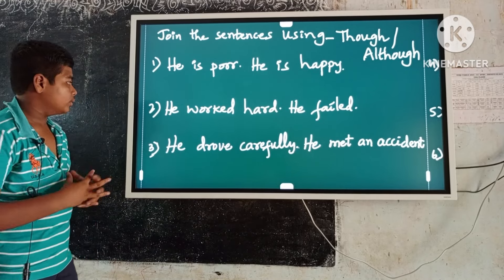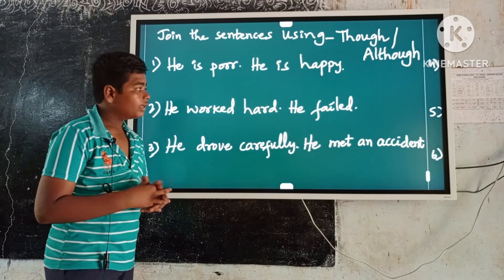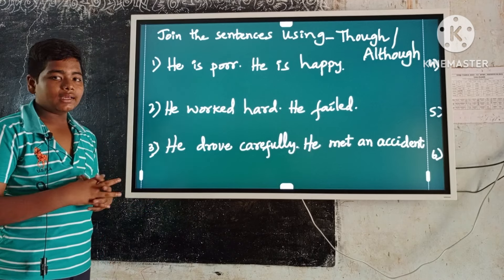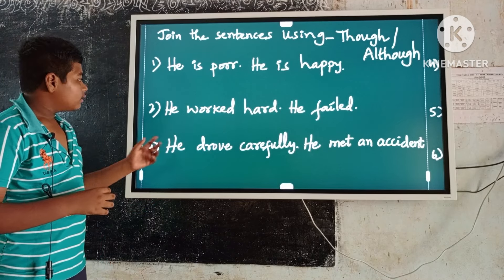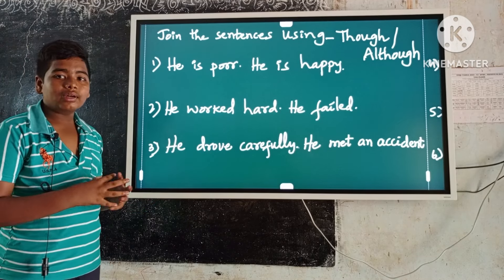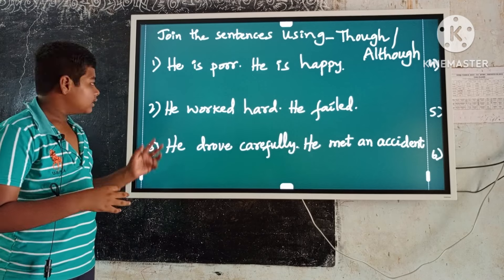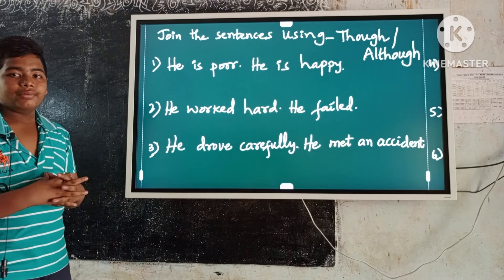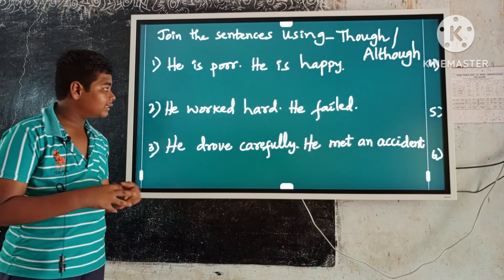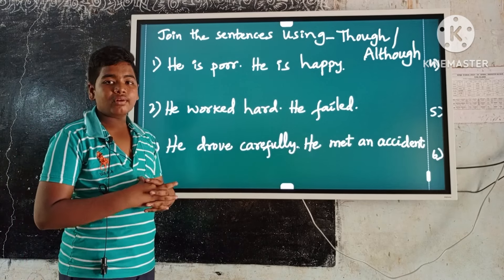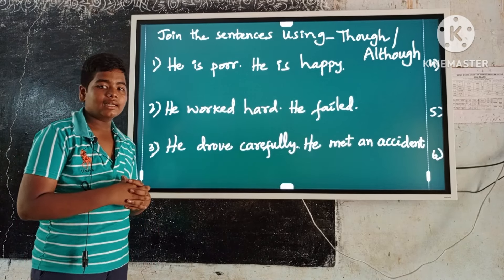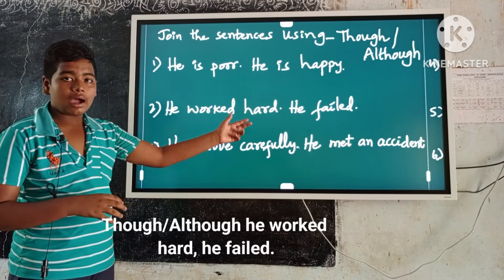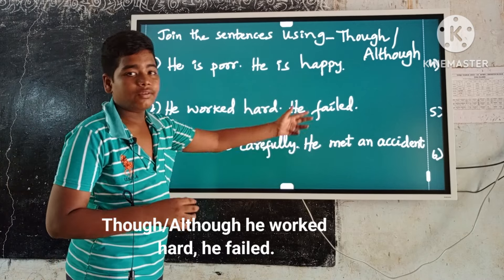Example number two: He worked hard. He failed. These are contrast ideas. Here the first occurring sentence is 'he worked hard.' Keep though or although before the first occurring sentence, and a comma before the second sentence. So the answer is: Though or although he worked hard, he failed.